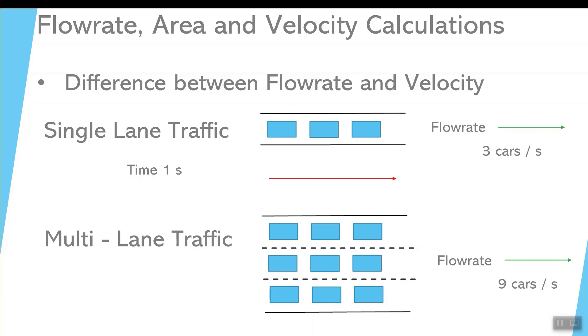So again, the difference between flow rate and velocity: velocity is how fast the cars, or in water and wastewater, how fast the volume of water goes by. Flow rate is how much, what's the quantity of the total volume of water that went by.